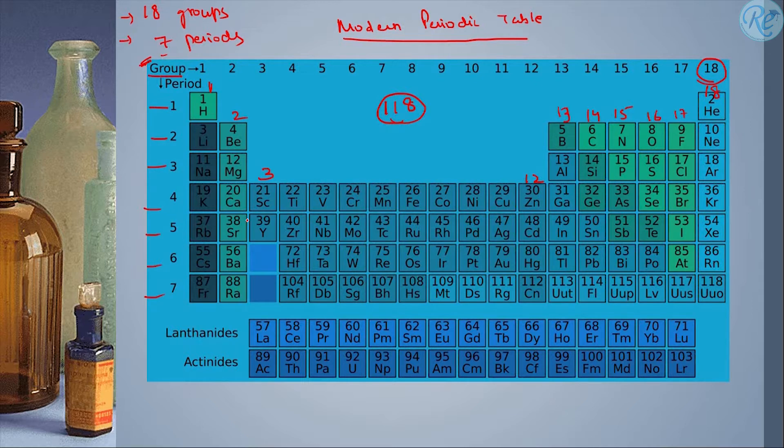What else can you see here? There are two separate lines that is lanthanides and actinides. Now, you don't need to worry about these because you will be learning about this in higher classes. Now, what else is important?